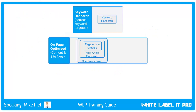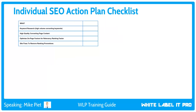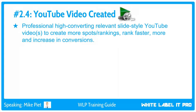We'll add fixing the site errors to the big picture and to the checklist. Now onto the next piece within the on-page optimization section, which is YouTube video creation. In our ranking process, we also rank a video hosted on youtube.com. Just like articles, we want one YouTube video per keyword group, so each keyword group has both an article and a YouTube video.